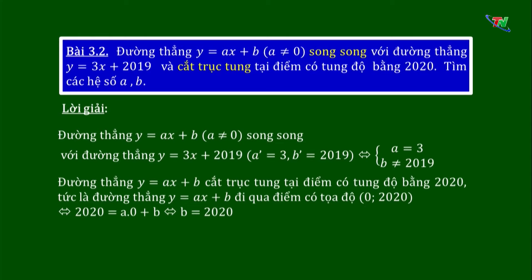Đường thẳng Y bằng Ax cộng B cắt trục tung tại điểm có tung độ bằng 2,020. Điểm này nằm trên trục tung, tức là đường thẳng đi qua điểm có tọa độ (0; 2,020). Thay X bằng 0, Y bằng 2,020 vào hàm số Y bằng Ax cộng B, ta được 2,020 bằng A nhân 0 cộng B, biến đổi tương đương ta tìm được B bằng 2,020. Vậy A bằng 3 và B bằng 2,020.